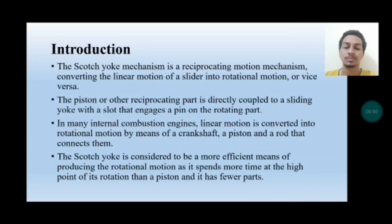In internal combustion engines, linear motion is converted into rotational motion by means of a crankshaft and arrangement of piston and rod. The Scotch Yoke is considered to be a more efficient means of producing rotational motion as it spends more time at the high point of its rotation than a piston, and it has fewer parts.